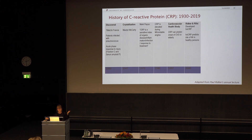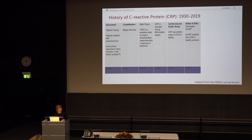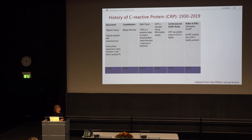Before the high-sensitivity assay, contamination in stored samples would obscure CRP levels, meaning it couldn't be used for prediction of future risk. One of the first epidemiological studies to show that CRP could predict heart disease risk in elderly people — free of prior heart disease — independent of other risk factors, was the Cardiovascular Health Study, which I'll come back to later.